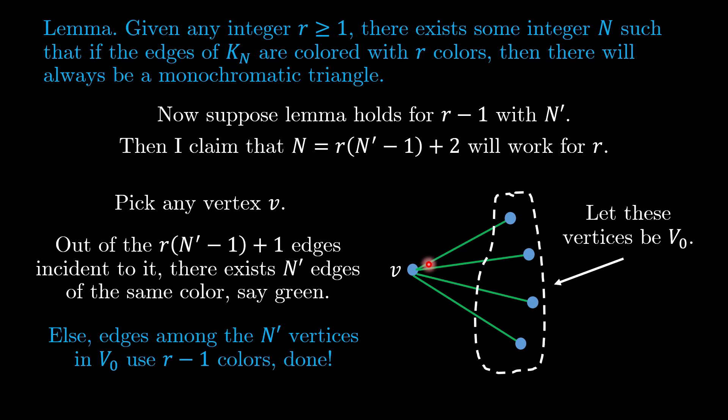But otherwise, among the edges in v_0, all the edges are only using the remaining r minus 1 colors. And we are talking about N' vertices minimally inside v_0. So by the induction hypothesis, there will be a monochromatic triangle among the vertices in v_0. So this proves the lemma.